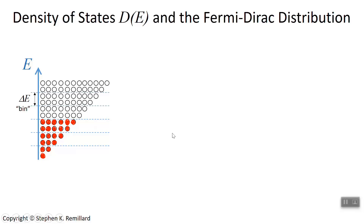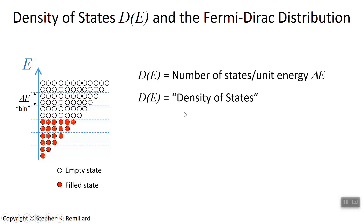With these bins having the same size delta E, there is an increasing number of states in each bin. There is a function that describes the number of states in each bin called the density of states, and there is a function that describes the probability that each bin is occupied. The number of states at each energy level is called the density of states — it's the number of states per unit of energy, where a unit of energy is delta E. Energy is given in electron volts in our semiconductor course. That's our density of states function D of E.